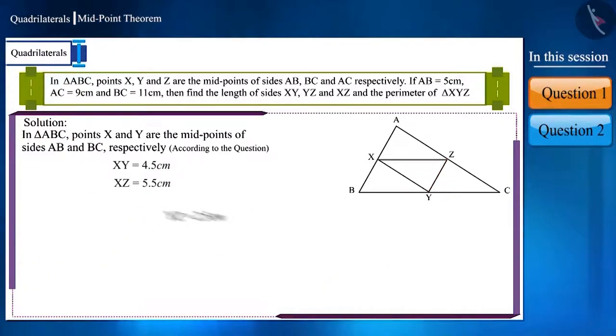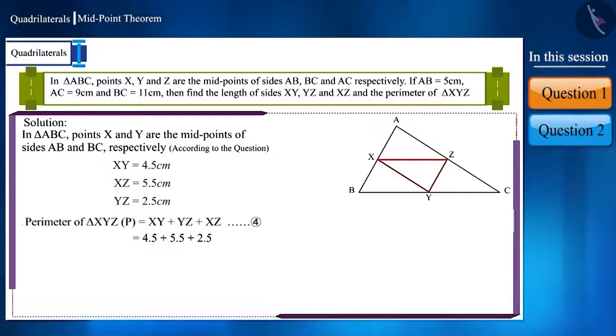We know that the perimeter of any triangle is equal to the sum of its three sides. Therefore, we can write the perimeter of triangle XYZ as follows. By substituting the values of XY, YZ and XZ here, we can find the perimeter. Thus, we get the perimeter of triangle XYZ as 12.5cm.